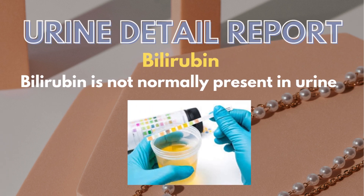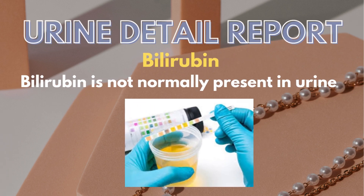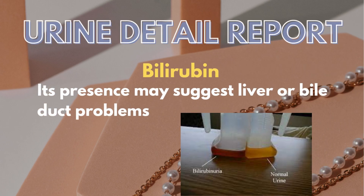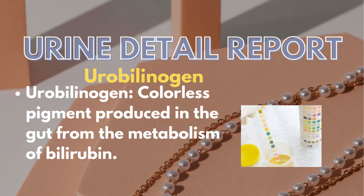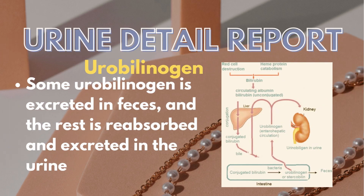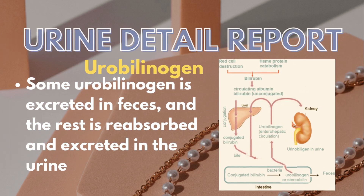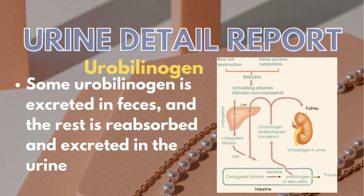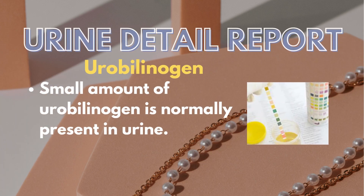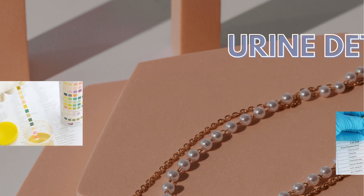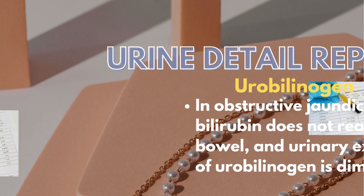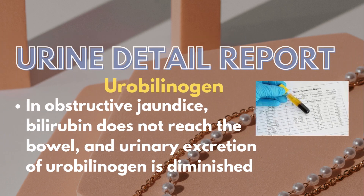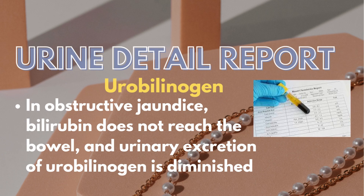Then we see bilirubin in urine report, but that is not normally present in urine. Its presence may suggest liver or bile duct problems. Then is urobilinogen, which is a colorless pigment produced in the gut from the metabolism of bilirubin. Some urobilinogen is excreted in feces and the rest is reabsorbed and excreted in the urine. A small amount of urobilinogen is normally present in urine, but elevated levels may indicate liver or red blood cell disorders. In obstructive jaundice, bilirubin does not reach the bowel and urinary excretion of urobilinogen is diminished.